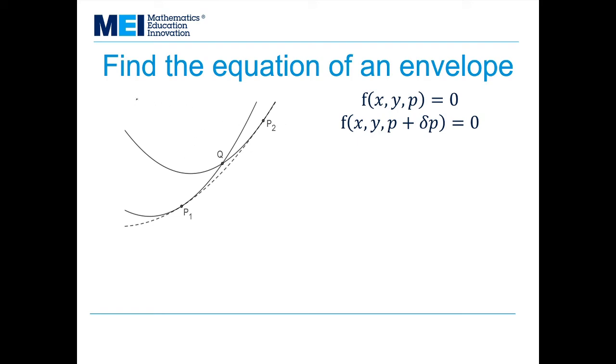Now, I'm using a small change between P1 and P2. So I express the function parametrically using x, y, and p. And that's my first curve. And then my second curve is in terms of x, y, and p plus δp. So for curve one, for P1, the parameter is p. And then the second curve for P2, the parameter is p plus δp.